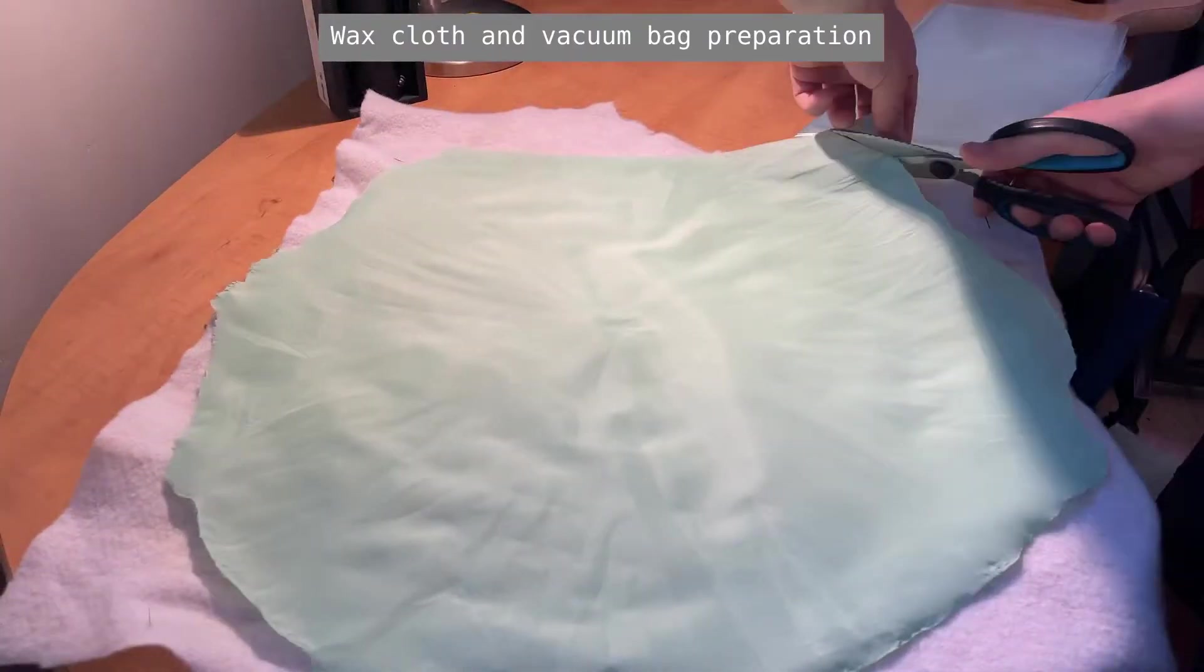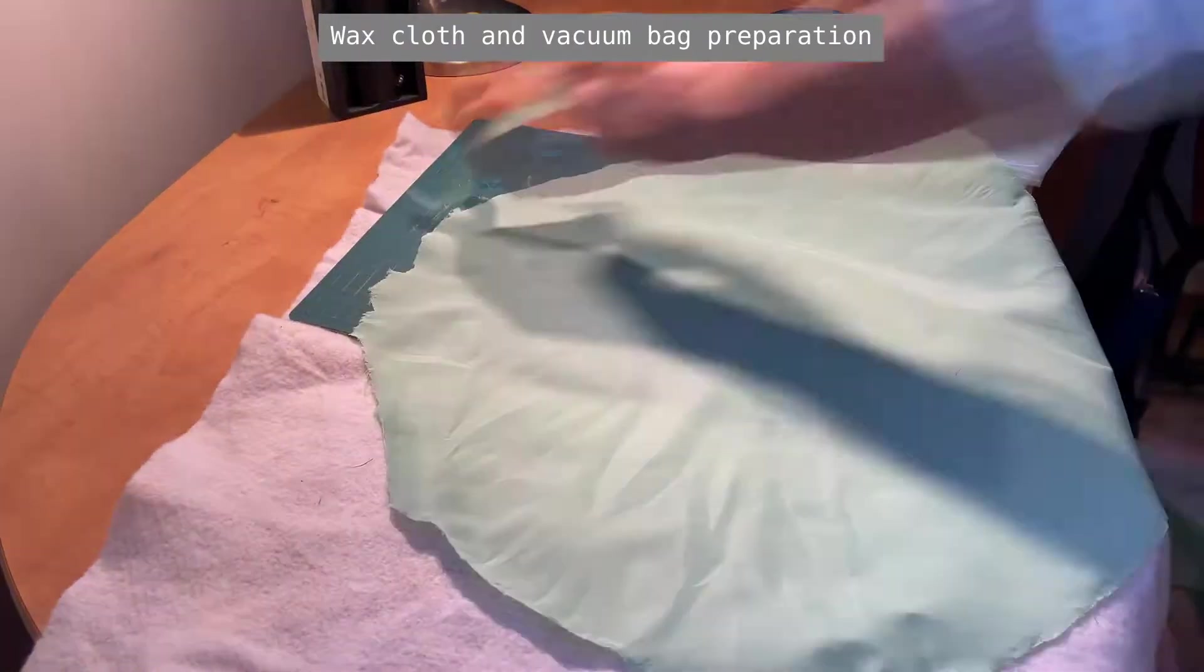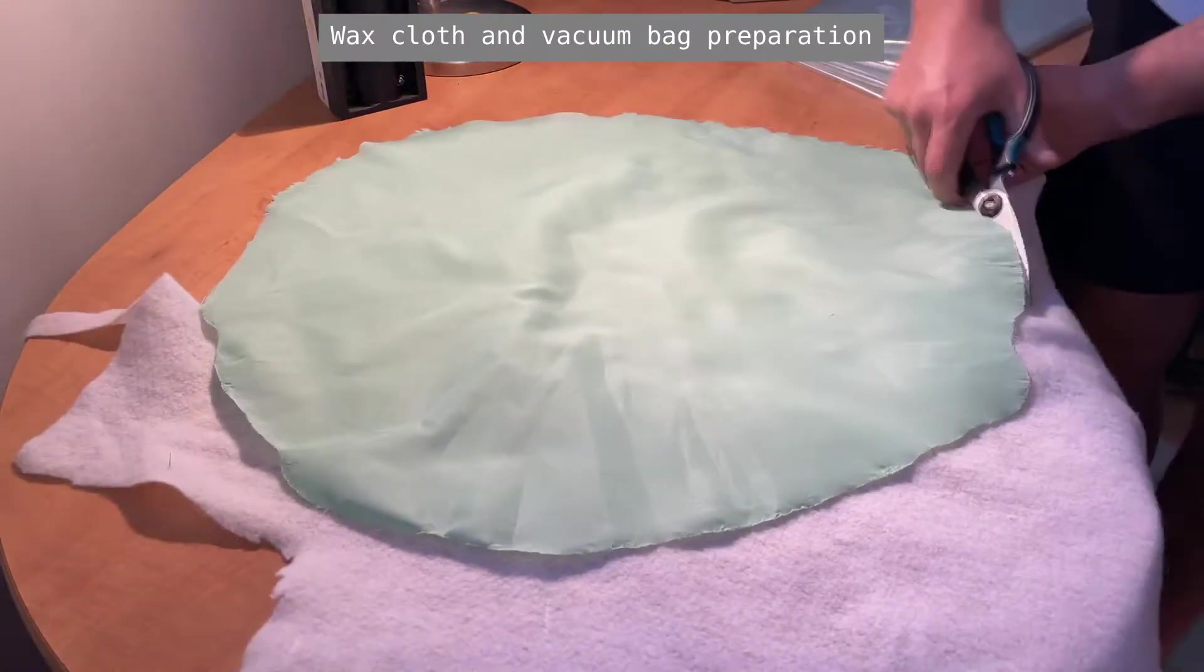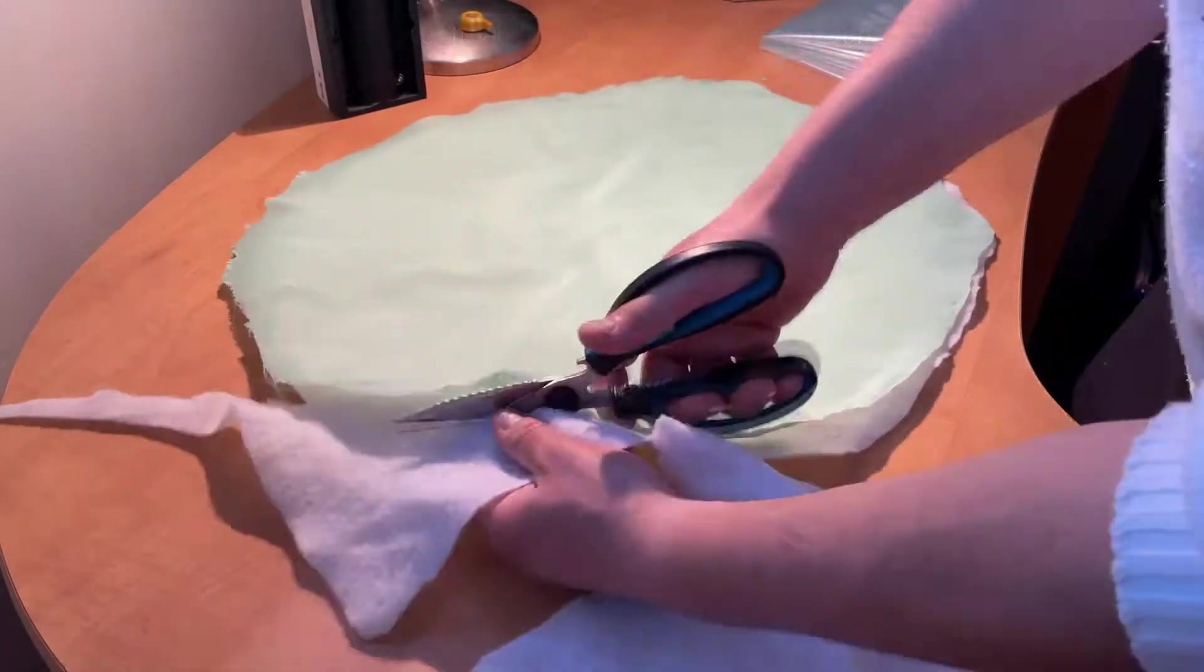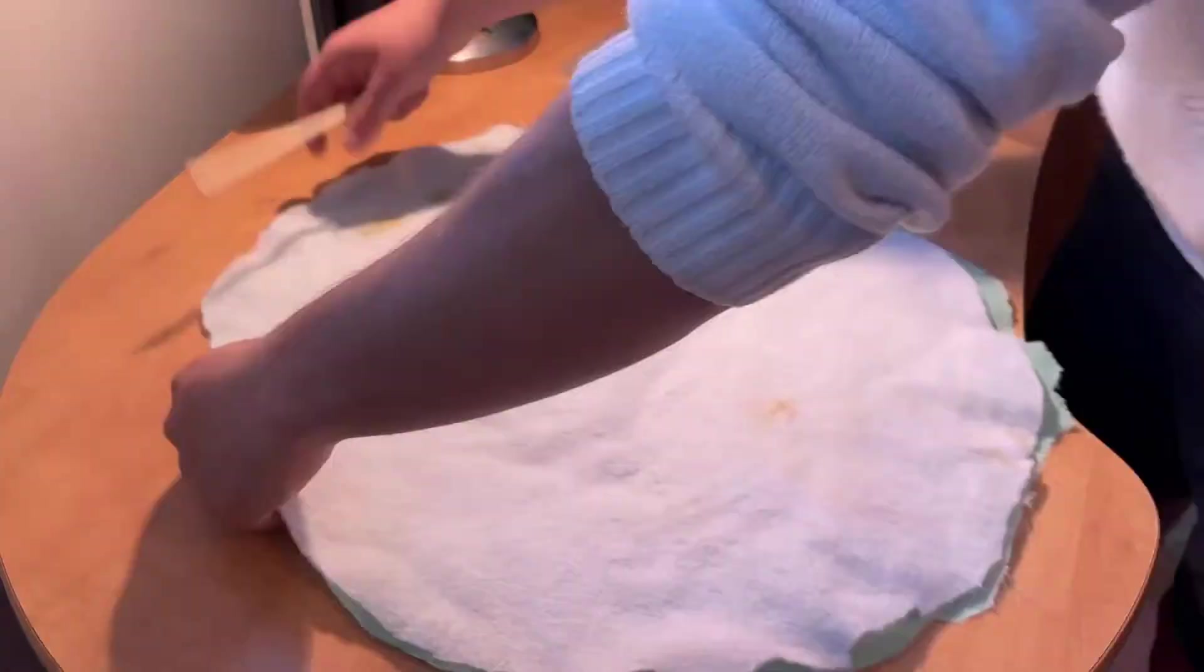For this scale mold, the cotton batting did not fit well inside the cone with the cloth and bag, so I am unable to use it for this layup, but I may try to incorporate the idea into the full scale layup.